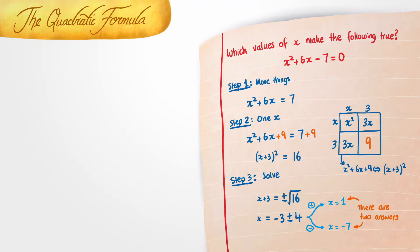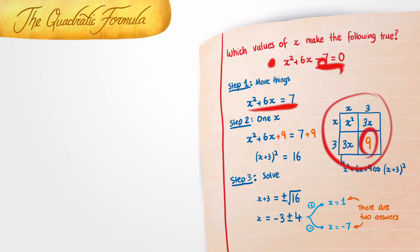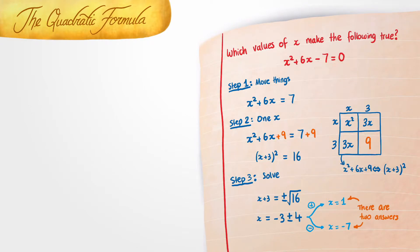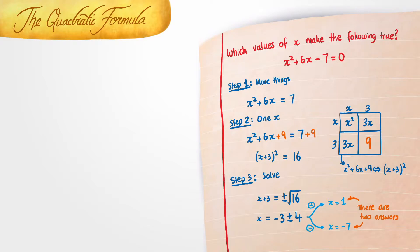Just to refresh your memory, we tried solving x squared plus 6x minus 7. The first thing we did is that we moved the 7 to the right hand side to get this expression. Then we completed the square to add 9 to both sides. Once we had done this, we realized that x squared plus 6x plus 9 is the same thing as x plus 3 all squared. So we replaced this, then square rooted both sides, added the plus minus, and moved the 3 to the other side to find that the answers were 1 and minus 7.